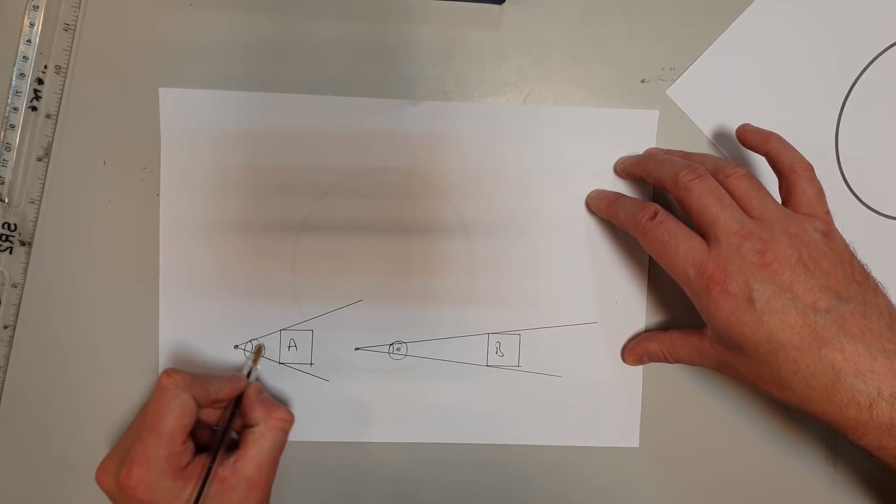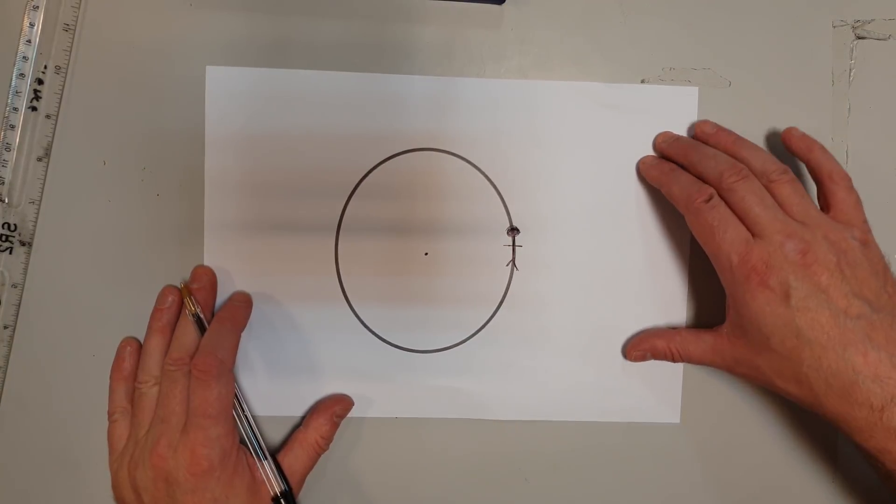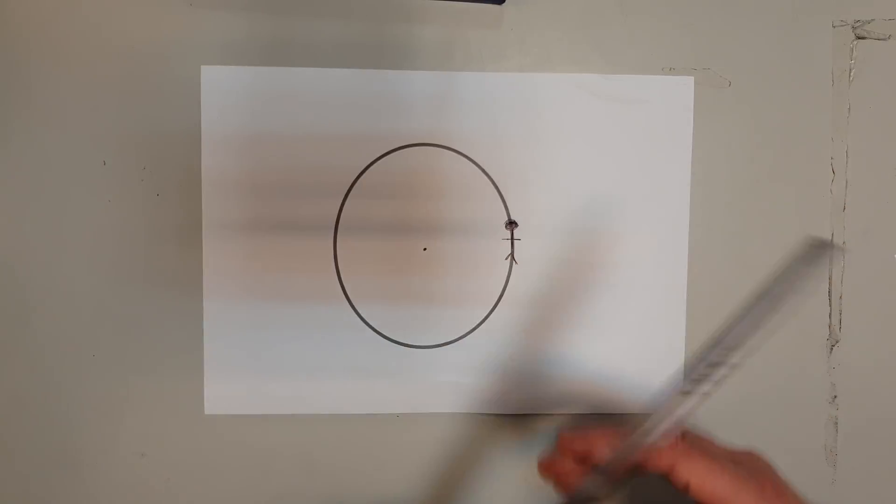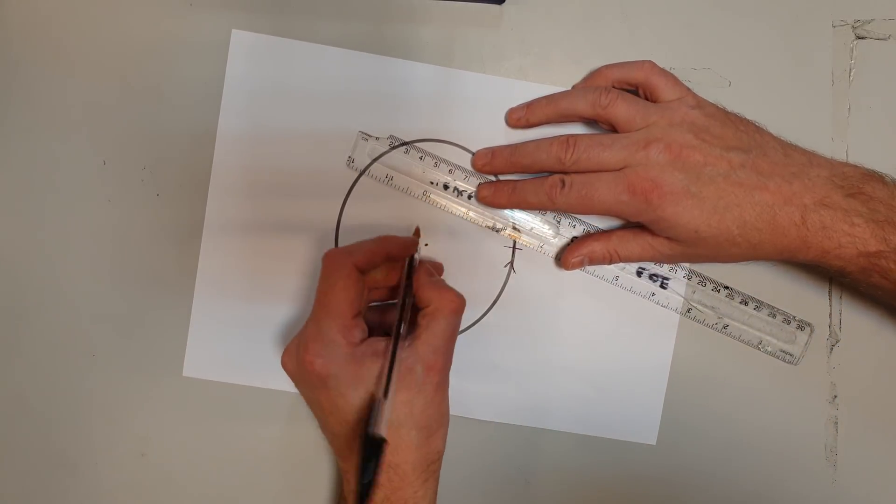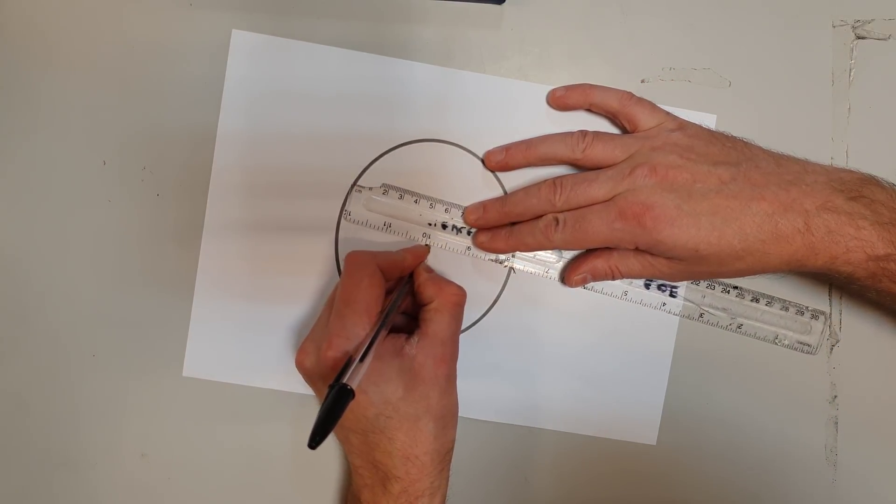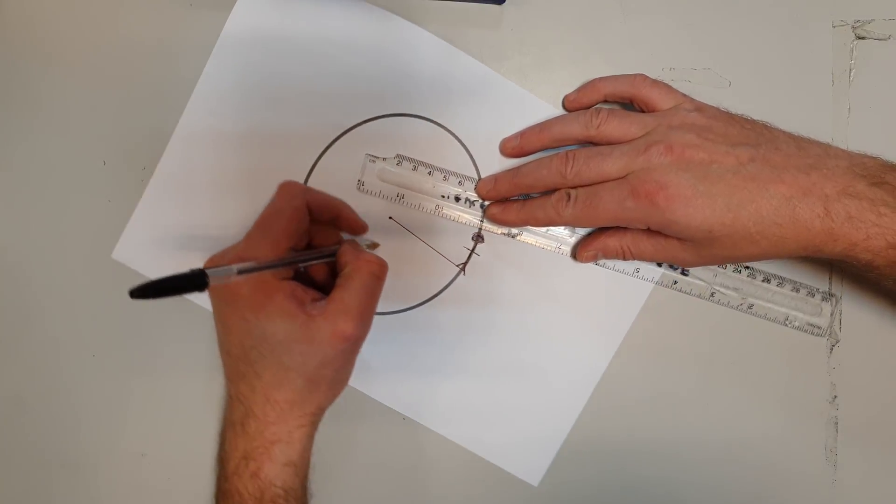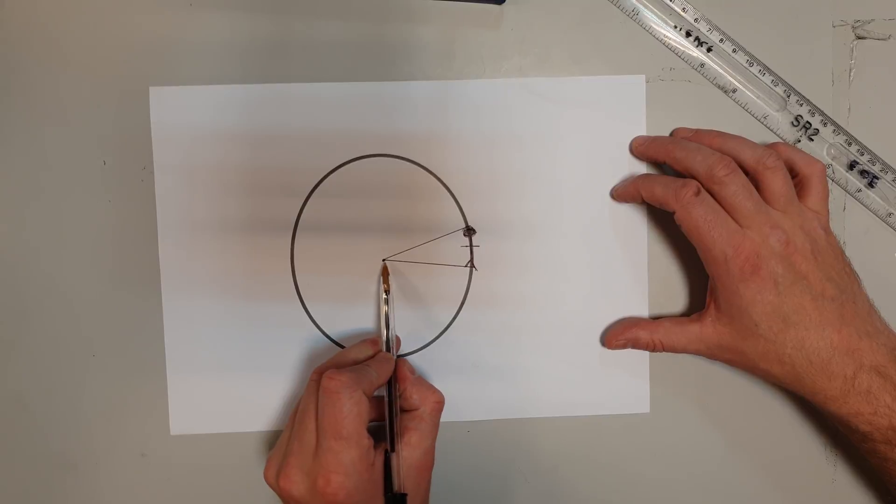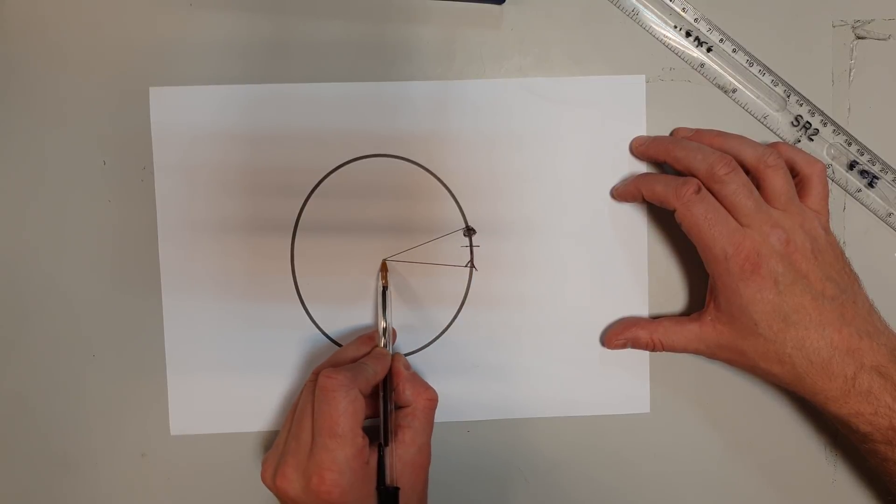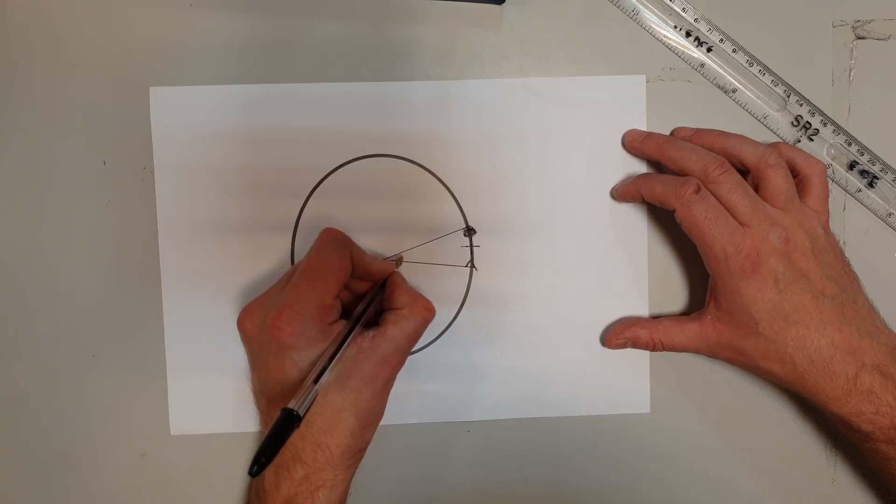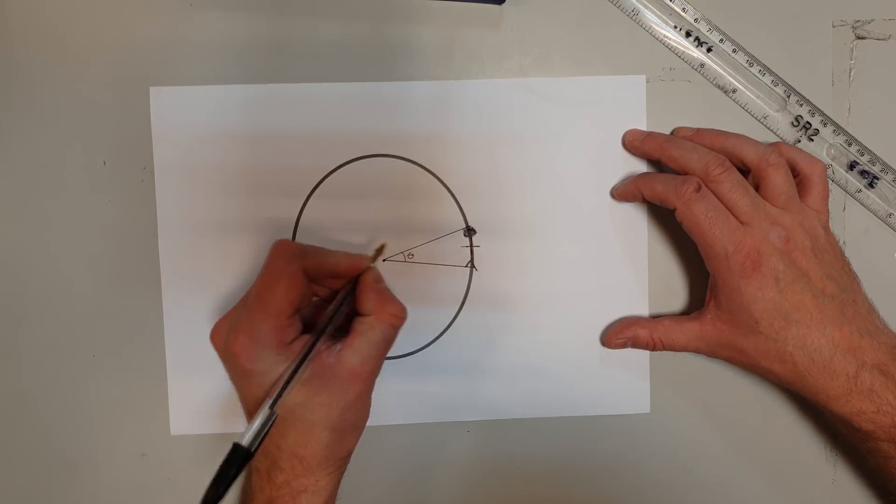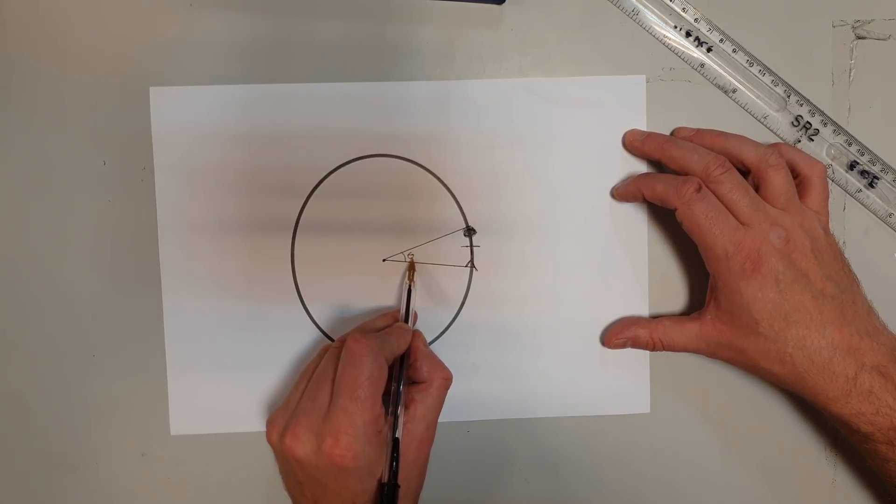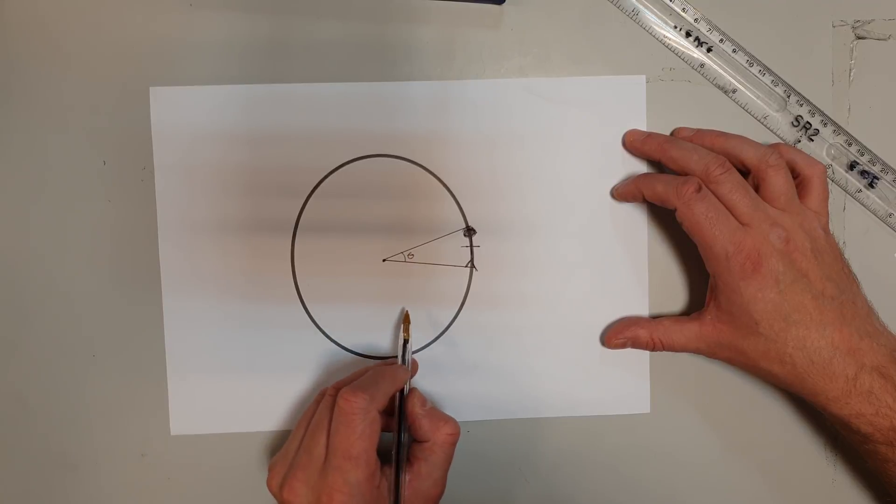But is there any way to actually calculate this without using the arctan equation? Well, here we go. What we're going to imagine is the object we're looking at is part of a giant circle. The distance to that circle, or the radius of that circle, is going to be the distance from us to the object. Our angular size is going to be this angle here. So how can I calculate that?